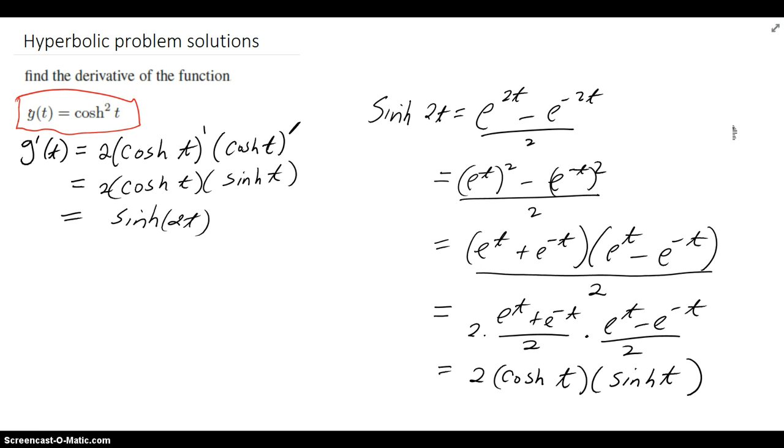So it's cosh squared t. So we use the chain rule. The derivative of the outside function is 2, decreased by exponent by 1 of the inside function, times the derivative of the inside, which I've just written with the prime notation in order to execute it on the next line. So that's 2 cosh t times the derivative of cosh is sinh.